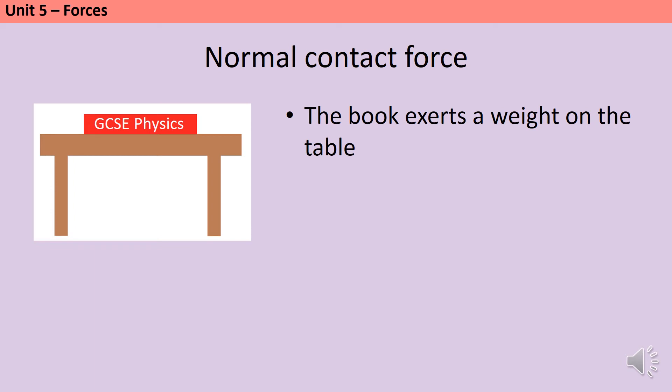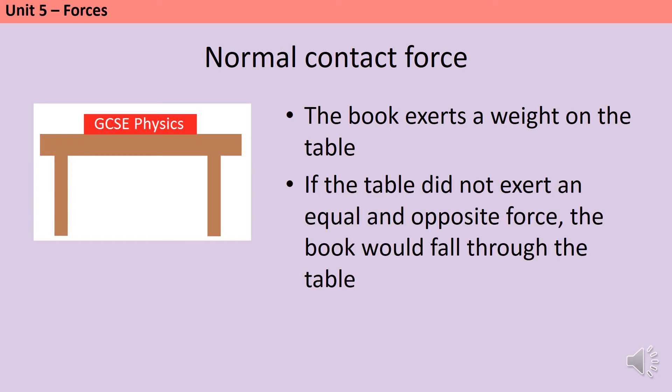Now imagine for a second that instead of being on the table, that book was being dropped onto a piece of paper that you were holding. The book would fall straight through because the paper wouldn't be able to support it. But if you drop the book on the table, then it doesn't fall through the table. And the reason for this is that the table is pushing back. The table is exerting an equal and opposite force. And we call this force the normal contact force.